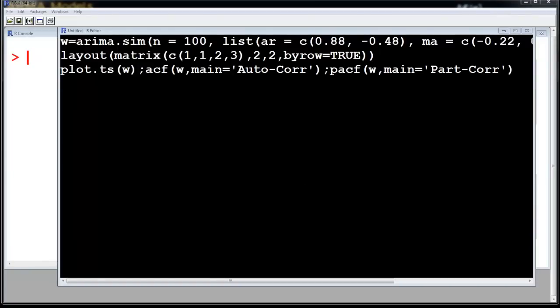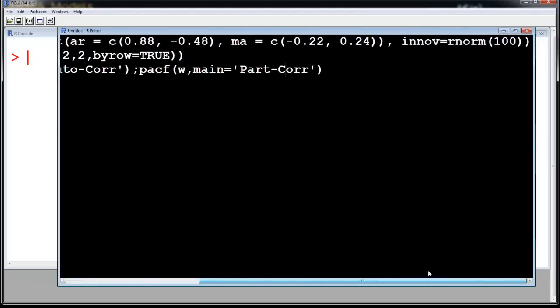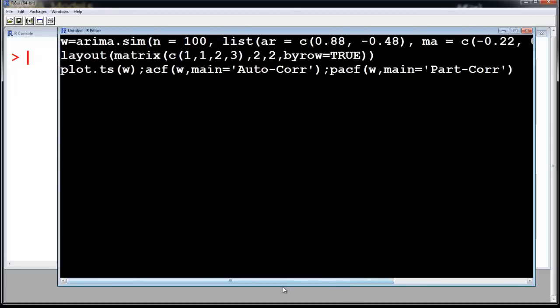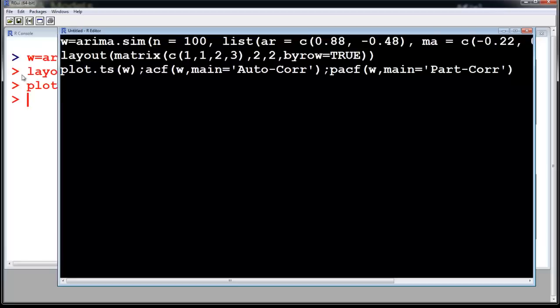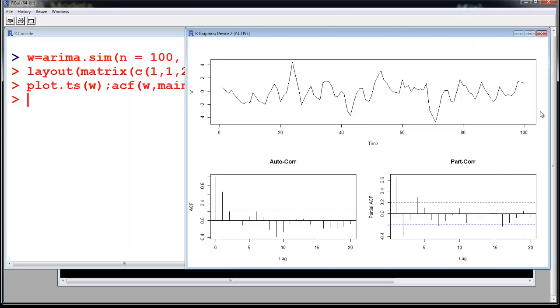We have the arima.sim command with coefficients and the random normal variable. The layout command ensures the plot function, autocorrelation function, and partial autocorrelation function all appear in the same figure. Select everything and hit the run button to get the plot.